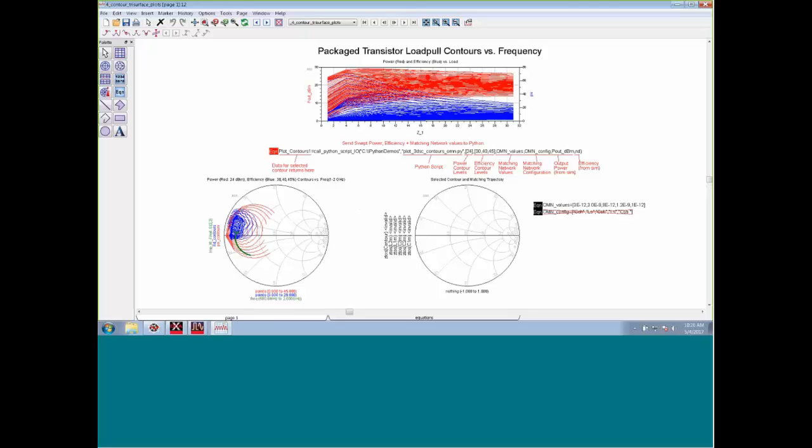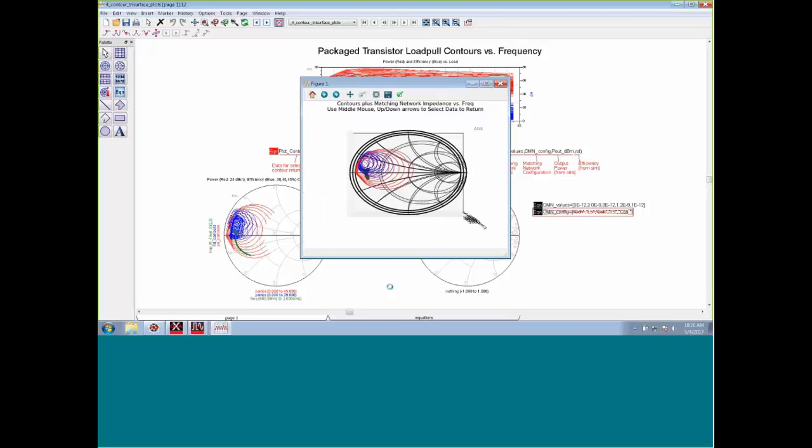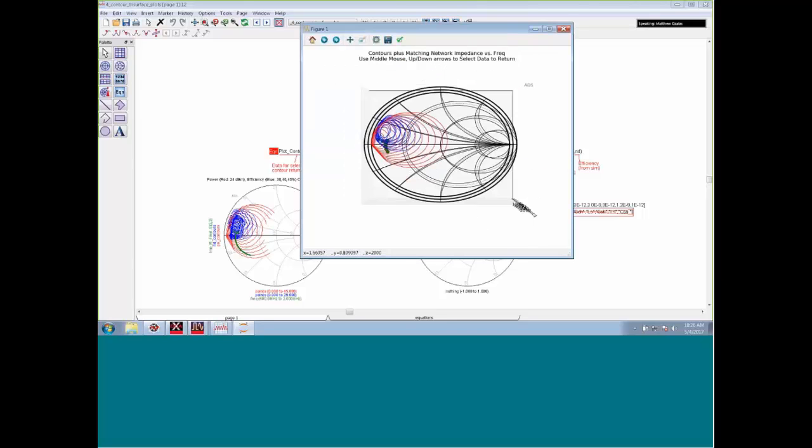I've got a script here that will plot those contours. I'm going to specify some of the levels and also add the matching network in. The same thing happens. I enable the equation. We're sending in quite a bit of data, so it's got to take a little bit more time to process. There are my contours and matching network, kind of like what I'm showing on the screen there. I'm going to make this bigger too, so that you can see it a little better.